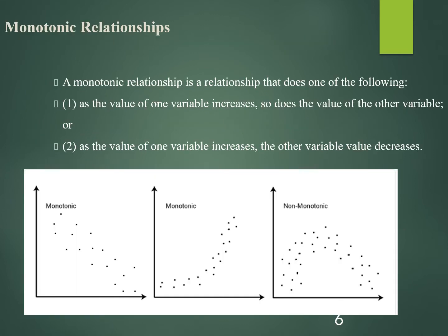A monotonic relationship is one that does one of the following: first, as the value of one variable increases, so does the value of the other variable — meaning both values increase together. Alternatively, as the value of one variable increases, the other variable's value decreases, which can be seen in the graph shown below.